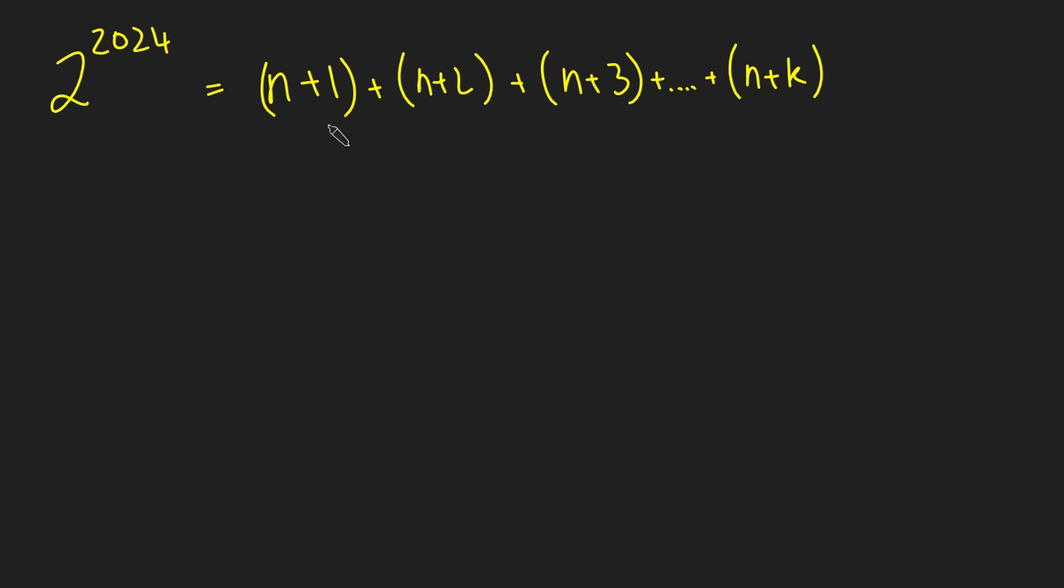So let's imagine it is possible, and let's imagine it's possible for, let's say, 7 integers. So when we sum 7 consecutive integers, we get 2 to the 2024. Now, what's the issue with this?